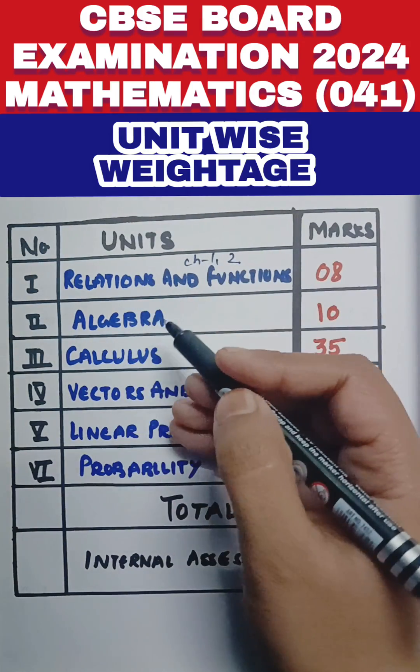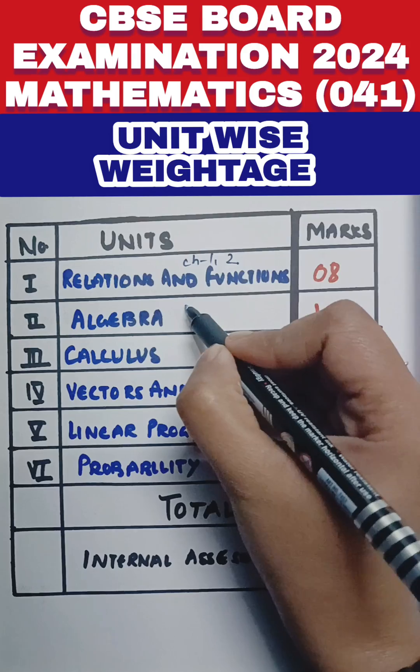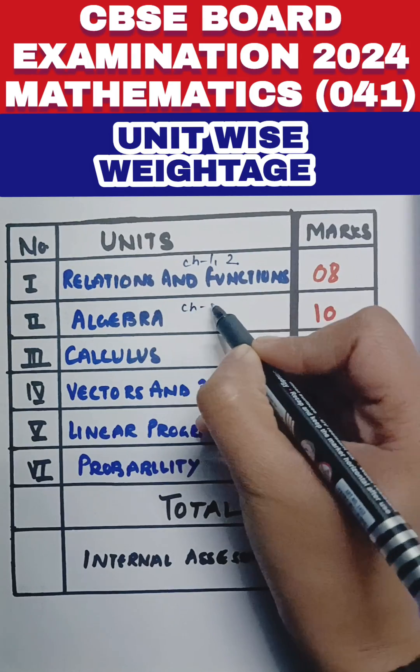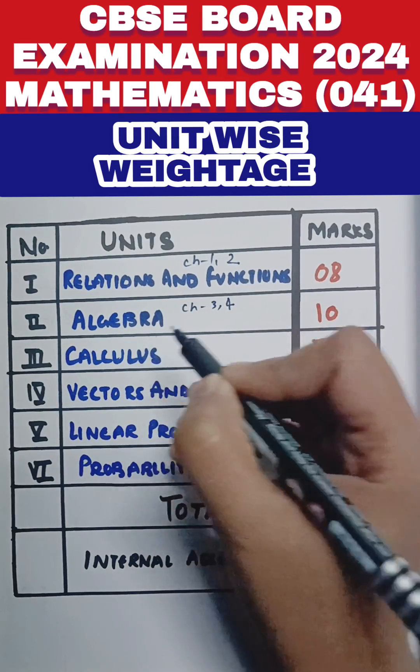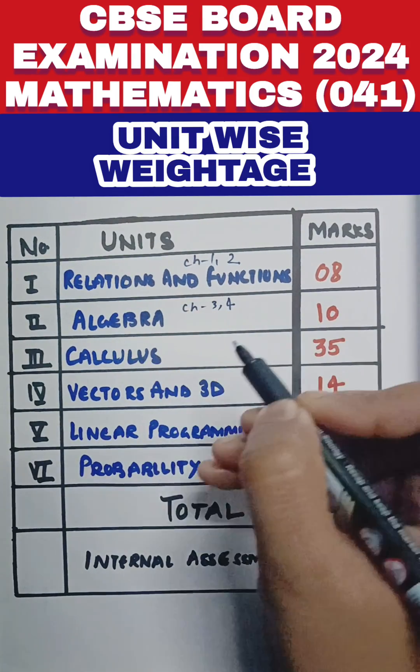Then we have Algebra, which contains Chapter 3 and Chapter 4 — that means Matrices and Determinants. This unit will come for 10 marks.